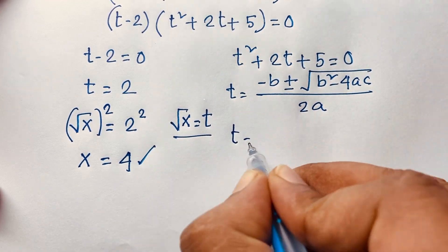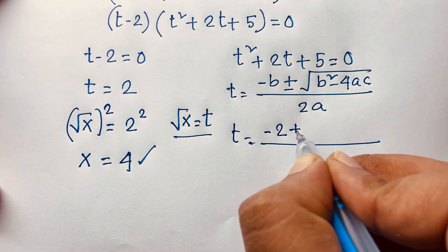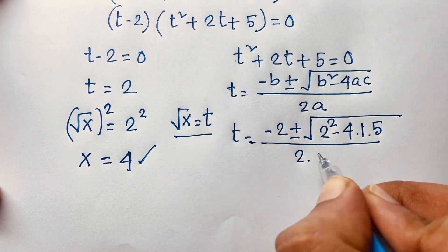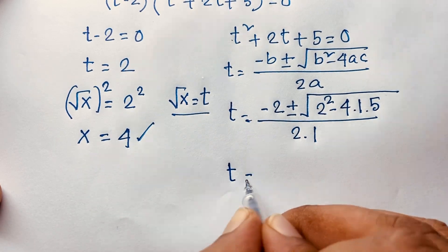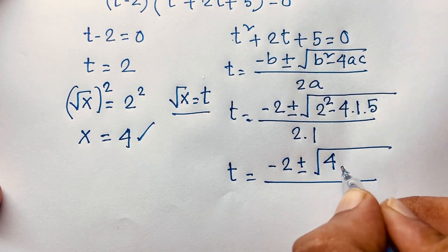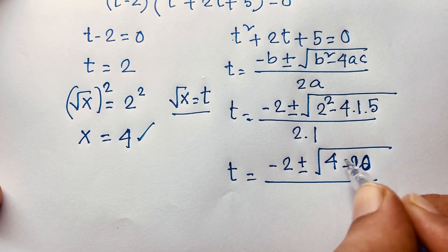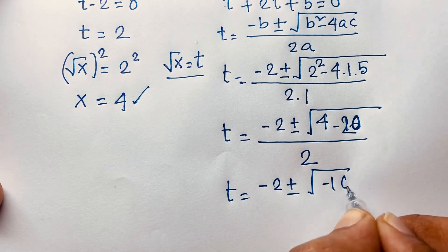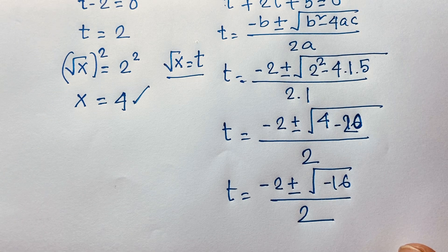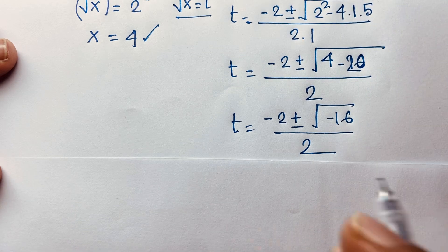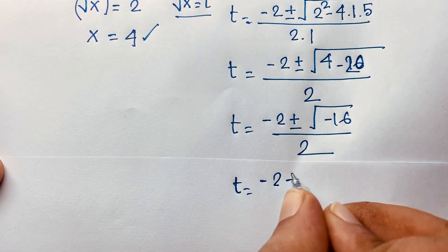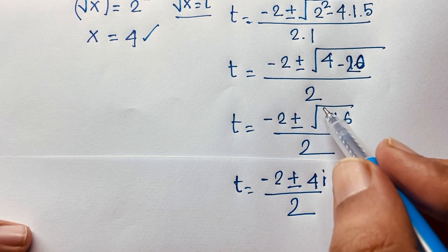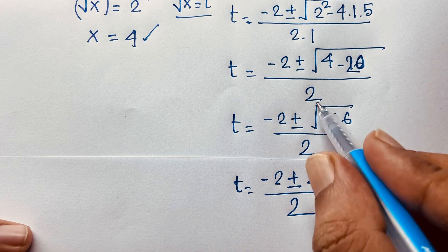For the quadratic t squared plus 2t plus 5 equals 0, we apply the quadratic formula: t equals negative b plus or minus square root of b squared minus 4ac, over 2a. Here b is 2, a is 1, c is 5. So t equals negative 2 plus or minus square root of 4 minus 20, over 2. That gives negative 2 plus or minus square root of negative 16, over 2.